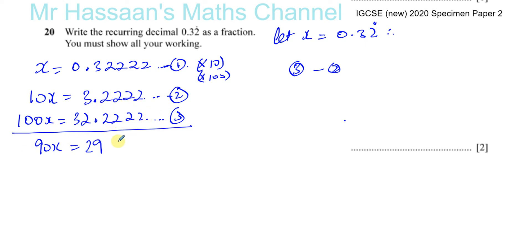So now I can say that means if I rearrange, this x is equal to 29 over 90. Now that doesn't break down—29 is a prime number—so we can say that therefore 0.32 recurring is equal to x as we said, and x is equal to 29 over 90.